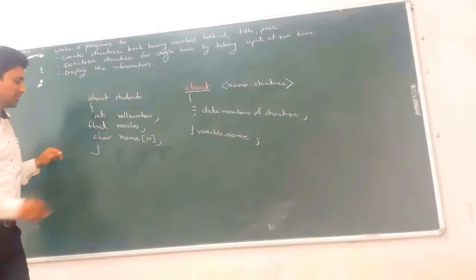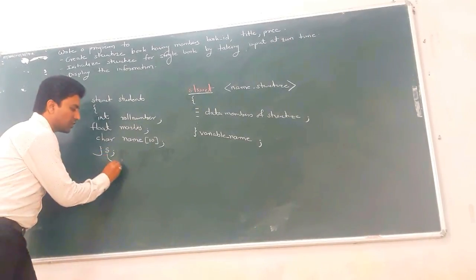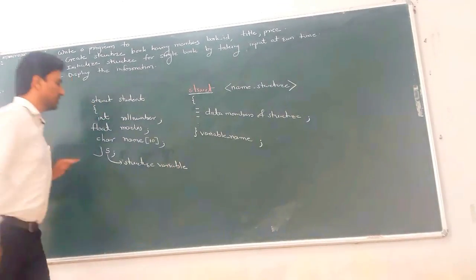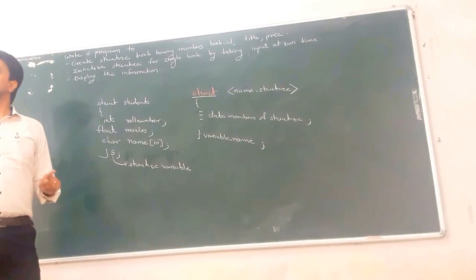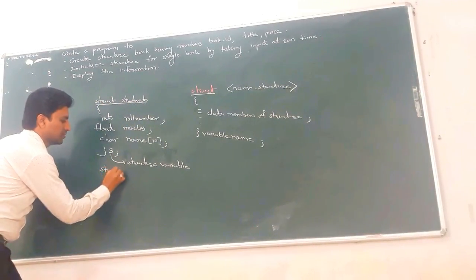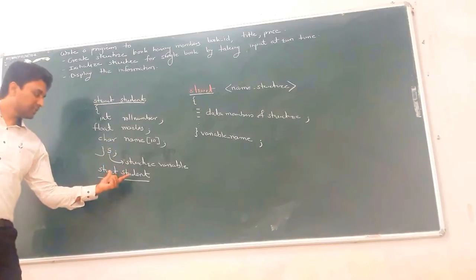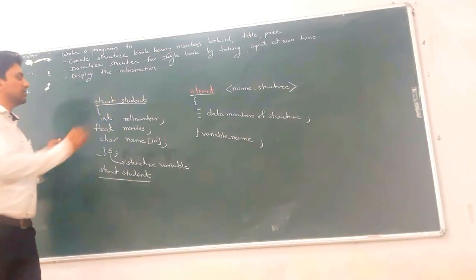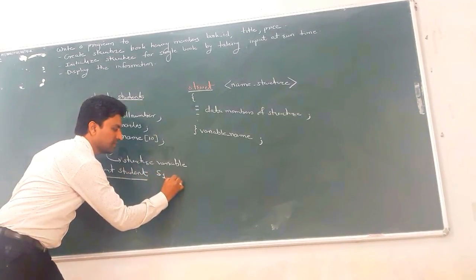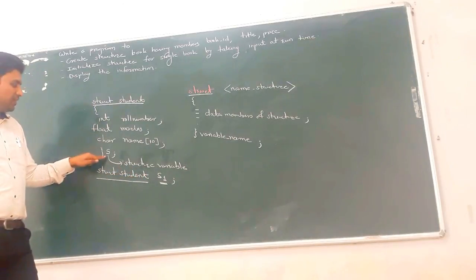This is called structure declaration. You can give the name of the structure variable — for example, 'S'. So 'S' is called the structure variable. This is one way to declare the structure variable. Another way is to write 'struct student' — this is the data type name, similar to int, float, or double — and then write the variable name, such as S1. S1 is then the structure variable.